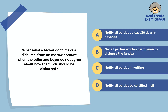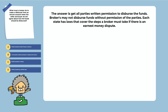What must a broker do to make a dispersal from an escrow account when the seller and buyer do not agree on how the funds should be dispersed? Notify all parties at least 30 days in advance, get all parties' written permission to disperse the funds, notify all parties in writing, or notify all parties by certified mail. The answer is to get all parties' written permission to disperse the funds. Brokers may not disperse funds without the permission of the parties. Each state has laws that cover the steps a broker must take if there is an earnest money dispute.